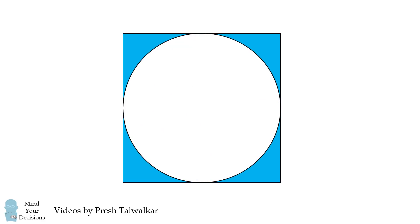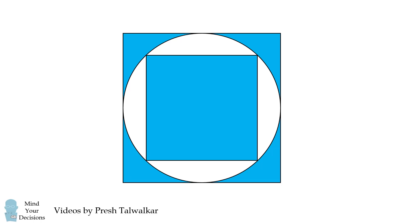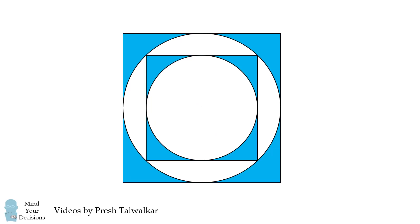Start with a square. Inscribe a circle in this square, and shade the region between the circle and the square in blue. For the next step, inscribe a square inside of this circle, and again inscribe a circle inside of this square. Once again in this step, shade the region between the circle and the square in blue.